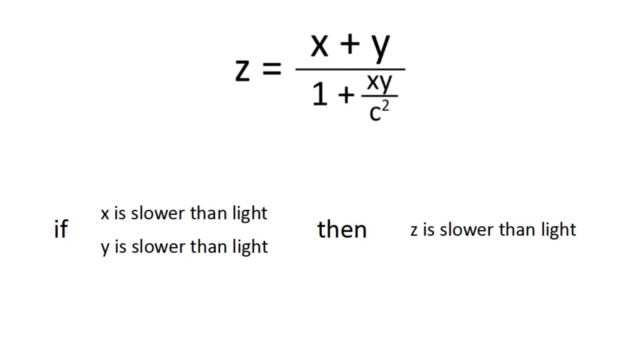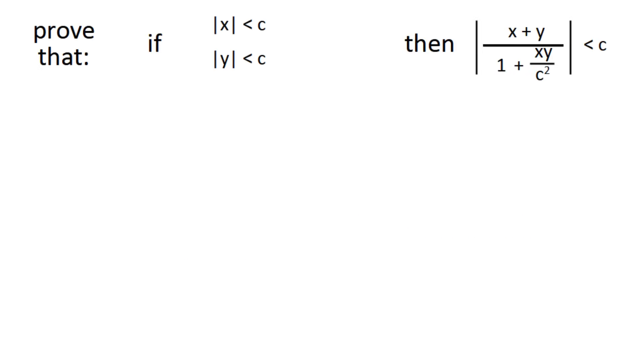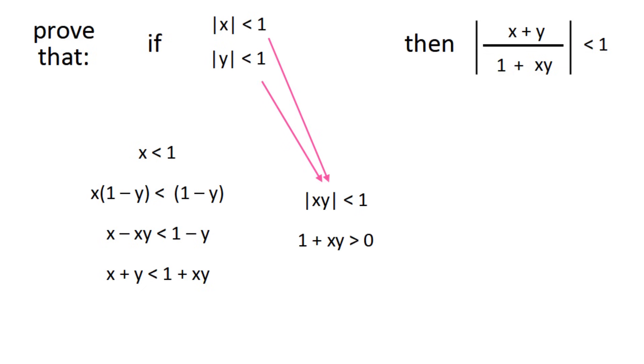But how do we know this? Well, we just have to prove that if x and y both have absolute values less than c, then the absolute value of x plus y over 1 plus xy over c squared is less than c. To make things simpler, we can use light seconds and seconds as units, in which case c is 1. We'll start with the inequality x is less than 1. Since the absolute value of y is less than 1, 1 minus y must be positive, so we can multiply both sides by it without flipping the inequality. After adding both y and xy to both sides, we're left with 1 plus xy. The absolute value of xy must be less than 1, which means 1 plus xy is positive, and we can divide by it without flipping the inequality. With that, we have x plus y over 1 plus xy is less than 1.